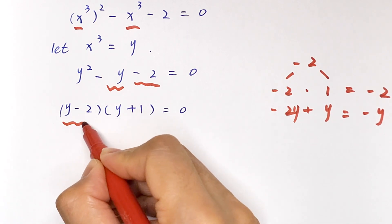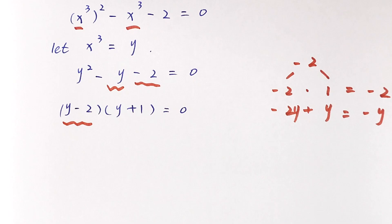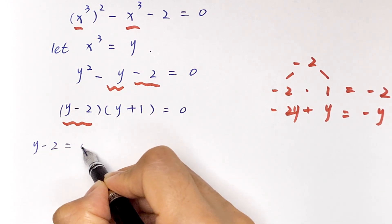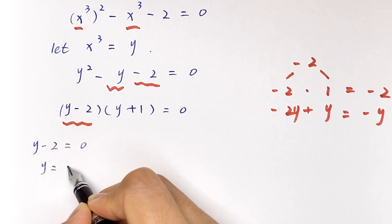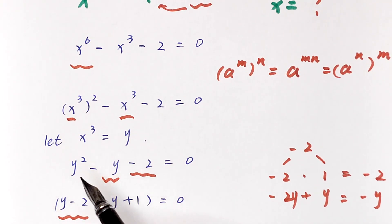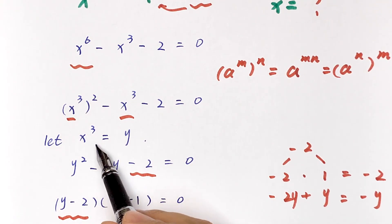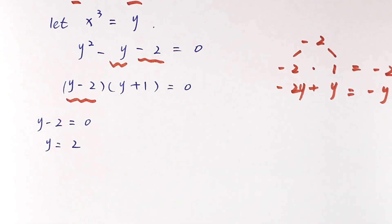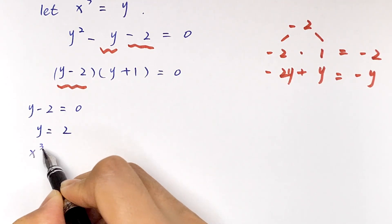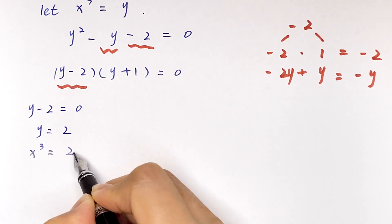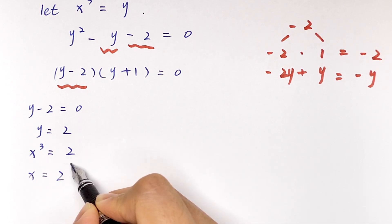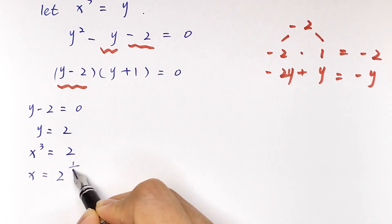We now have two cases. Case one: y minus 2 equals 0, so y equals 2. Remembering that we let x cubed equal y, this means x cubed equals 2, so x equals 2 to the power 1 over 3.